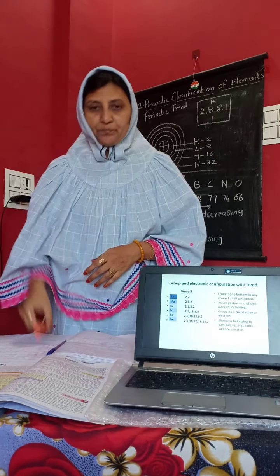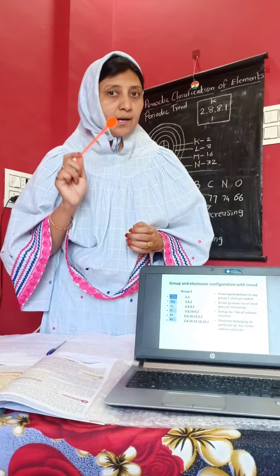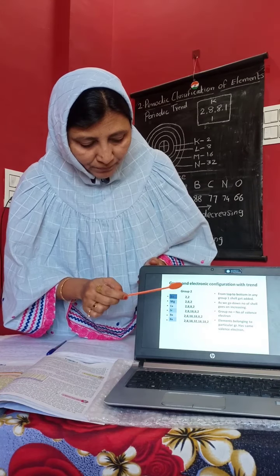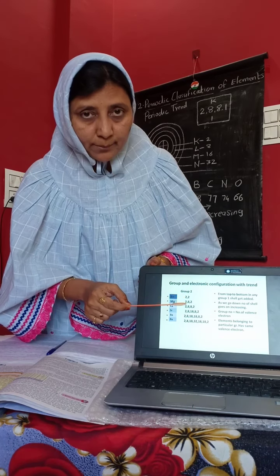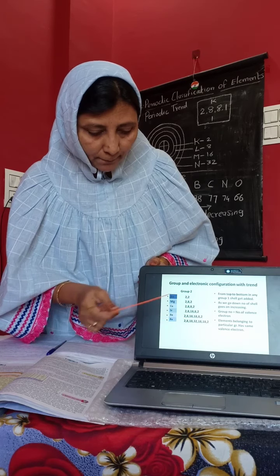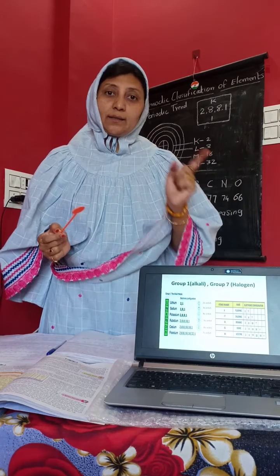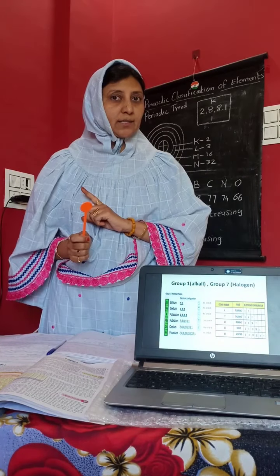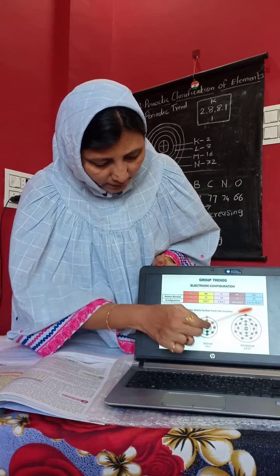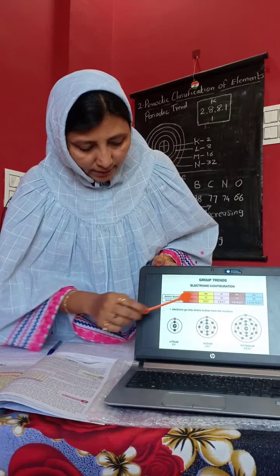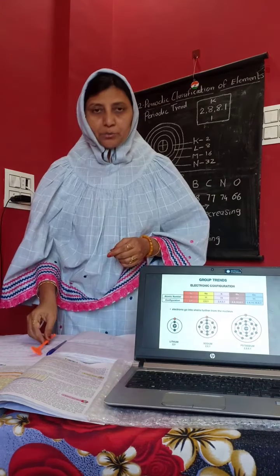If we see the elements arranged in the periodic table from top to bottom, the shells are increasing — each next element has one more shell. And if you go horizontally from left to right, the number of electrons are increasing but the shell does not increase. According to this pattern, you will see how the electrons are arranged in the shell.